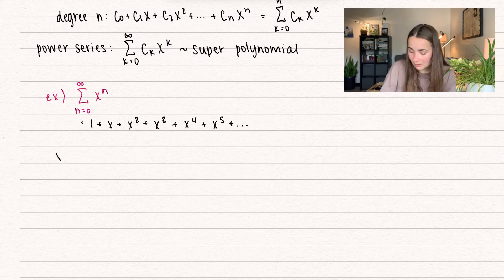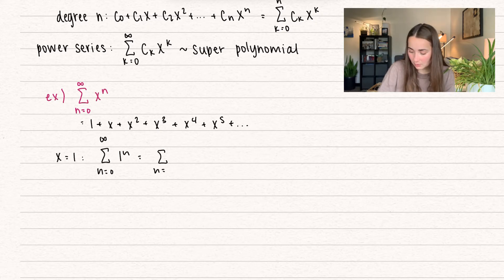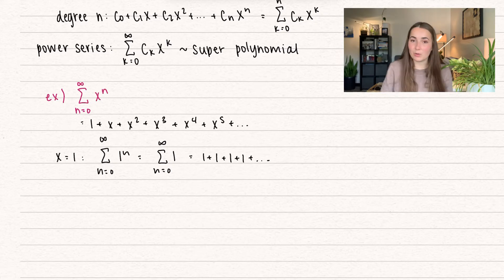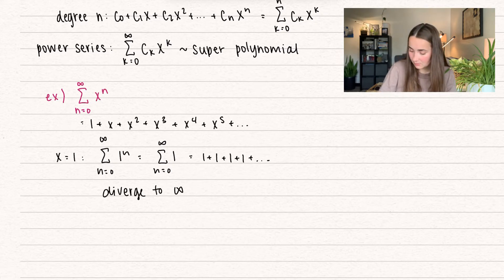If I were to plug in x equals 1, we would have the summation n equals 0 to infinity of 1 to the power of n. But 1 to the power of n, no matter what n is, is just going to be 1. So this is going to be the summation of 1 — we're just adding 1 forever. And so this is going to diverge to infinity.